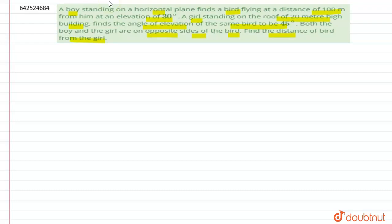For solving this, let us draw the figure first. We have a horizontal plane on which a boy is standing and observing a bird. Let us say the boy is standing at this point and observing a bird which is 100 meters away from him. So this is the distance between the bird and the boy, and the angle of elevation of this bird is given to us as 30 degrees.